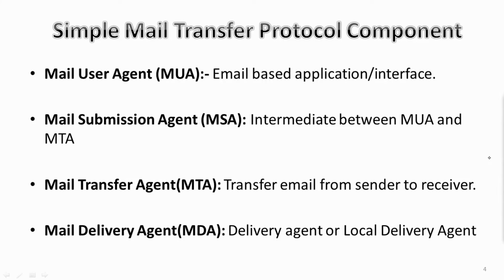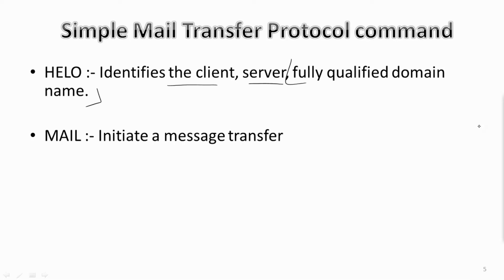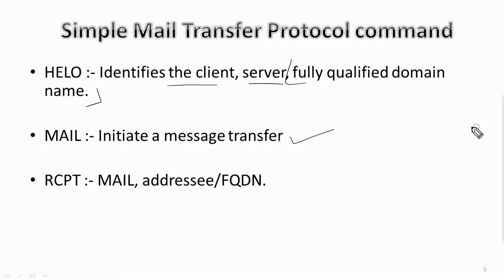There are also some SMTP commands. The HELO command identifies the client to the server using a fully qualified domain name, and it is sent once per session. The MAIL command initiates a message transfer with the fully qualified domain name of the originator. The RCPT command follows MAIL and identifies an addressee by their fully qualified domain name; for multiple addressees, one RCPT is used for each.